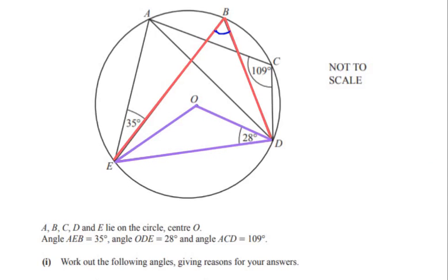We can see that OE is the radius of the given circle and OD is also the radius of the given circle. Since OE equals OD because both are radii, triangle OED is an isosceles triangle. Hence we can write angle OED as 28 degrees as well.